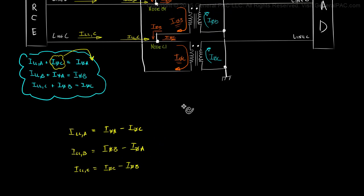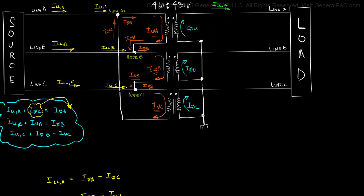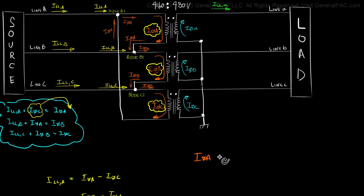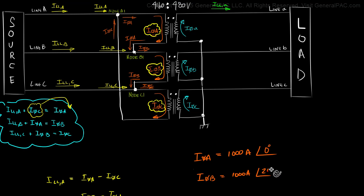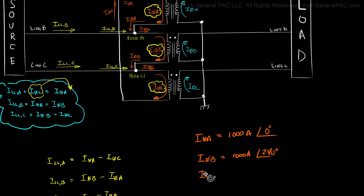Now that we've written our equations like this, let's define our phase values. Our phase values are the currents that are flowing through our windings. We're going to define a balanced system. Phase current A on the primary side equals 1000 A at 0 degrees. Phase current B equals 1000 A at 240 degrees. And phase current C equals 1000 A at 120 degrees.